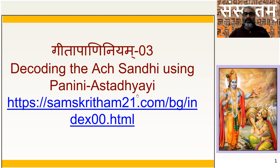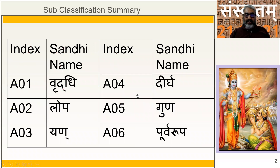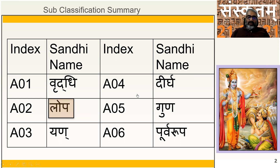Welcome to Tutorial 3 of Gita Paniniyam. We will continue our study of Ach Sandhi further. A quick recap of what we did last time: we had seen Vridhi Sandhi. We actually have 6 types of Ach Sandhis: Vridhi, Lopaha, Yana, Teerga, Guna, and Purvarupam. In this tutorial we are going to learn about Lopa Sandhi, which has been used in the Bhagavad Gita in chapters 1 and 2.